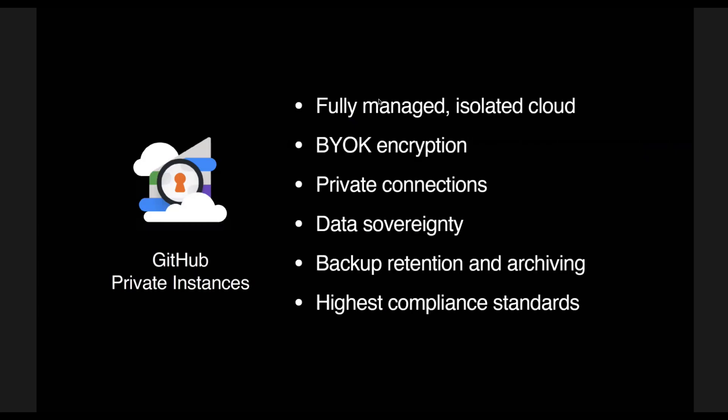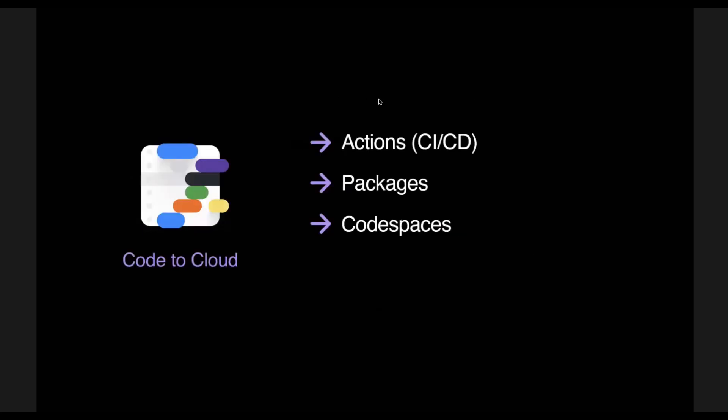Another great announcement we made today is GitHub Private Instances. Think about this as the most secure and compliant way of consuming GitHub in the cloud. We created this for highly regulated industries. It's a fully managed isolated cloud solution. It has bring-your-own-key encryption and private connections — a more advanced form of IP whitelisting. We're able to deploy this anywhere in the world, so it meets EU model clause laws and data sovereignty. It also provides backup retention and archiving, supports retention up to 10 years, and we will apply for a lot of compliance standards.